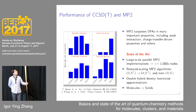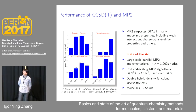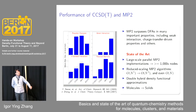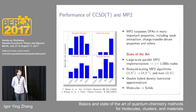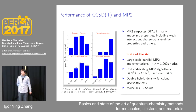Unlike CCSD(T), MP2 itself is not accurate enough. However, it outperforms DFT in many important properties, including weak interaction and charge transfer driving properties. Large-scale parallel MP2 implementation and reduced-scaling MP2 algorithms are two active topics in MP2 development. Some researchers also try to improve the accuracy of MP2 without increasing the computational cost. A celebrated family of this kind of MP2-based improvement is the so-called double-hybrid density functional approximations.